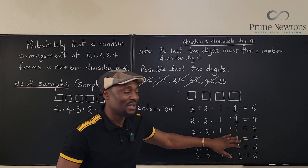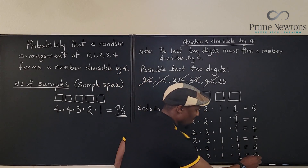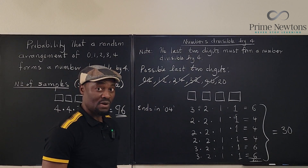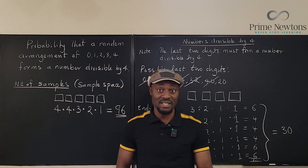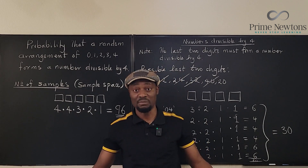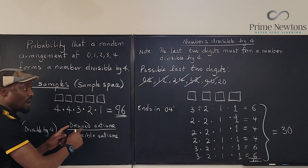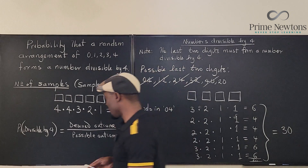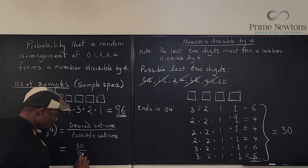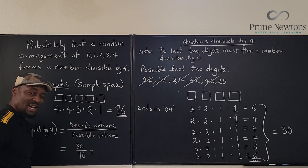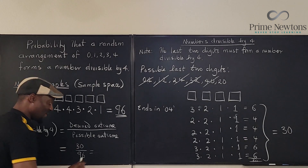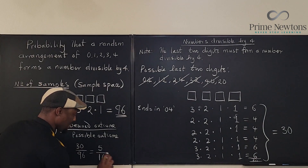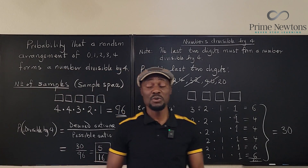So the total number of arrangements divisible by four is 6 + 4 + 4 + 4 + 6 + 6 = 30. Now let's find the probability. Probability equals desired outcomes divided by total sample space. The desired outcome is numbers divisible by four, which is 30. The total possible arrangements is 96. So we get 30 divided by 96. Dividing both by 6: 30 ÷ 6 = 5, and 96 ÷ 6 = 16. Your probability is 5 over 16.